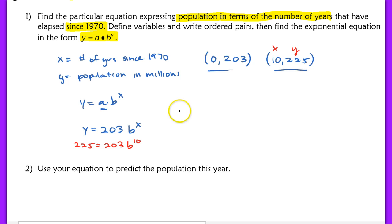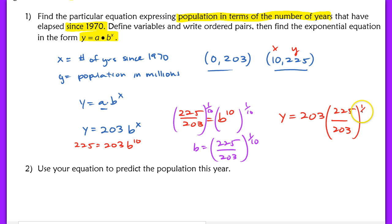I want to solve for b, so I'm going to isolate the b by dividing out the 203 first. So I have 225 over 203 equals b to the 10th. Now to solve for b here, we have to raise to the reciprocal power of 1/10, or you could also take the 10th root. I end up with b equaling 225 over 203 raised to the 1/10 power. So my particular equation becomes y equals 203 times (225 over 203) raised to the 1/10, and all of that b value is raised to the x power. I'm going to write this as (1/10) times x.